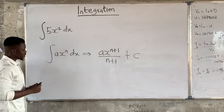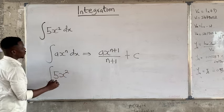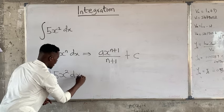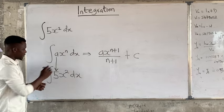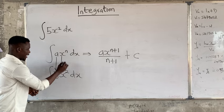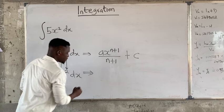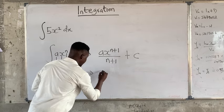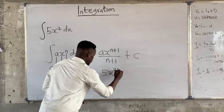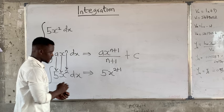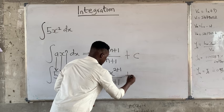Now picking up this question here, we now say 5x squared dx. Where my a is my 5, my x is x and the n is 2. So this is going to be equal to 5x to the 2 plus 1 over 2 plus 1 plus c.